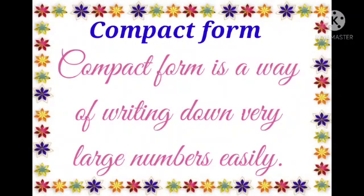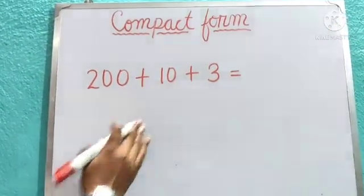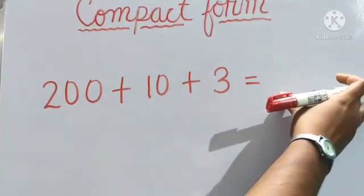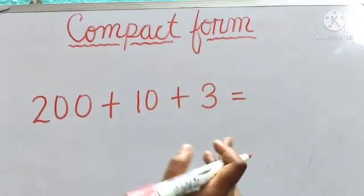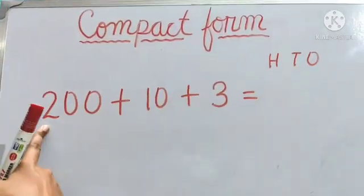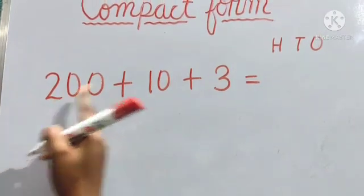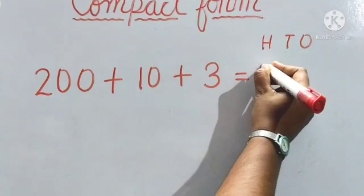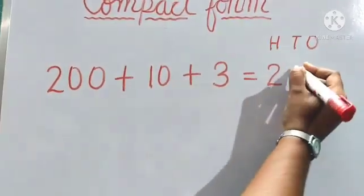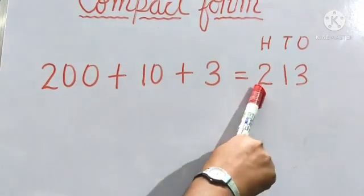To better understand, let us see some examples. In compact form, this type of question will be given and you have to write it in compact or standard form. First, always write the places. Now read: 200 plus 10 plus 3. 200 means 2 is in the hundreds place. 10 means 1 is in the tens place. And 3 ones means it is in the ones place. So we read it as 213.